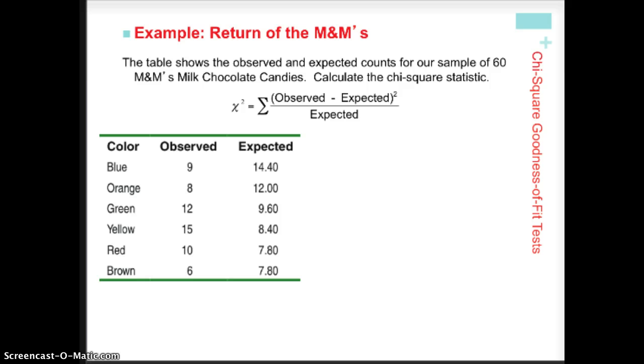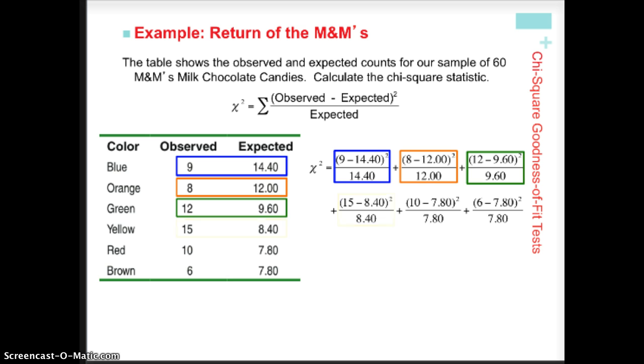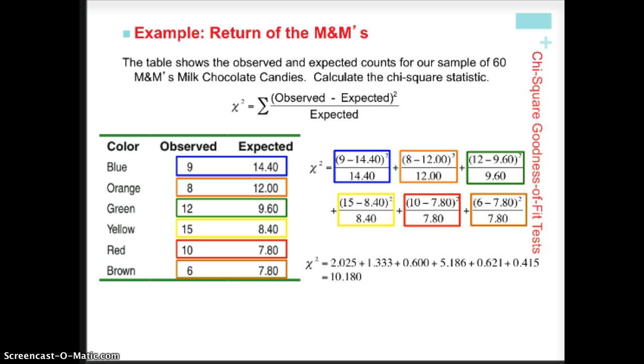Okay, so when we calculate these, we have the observed, we have the expected, and we're going to find the difference between the observed and expected, square, divide by the expected value, and then add all of the numbers together. The sum of all of those numbers is the expanded summation notation, so that's going to be our chi-square test statistic value.